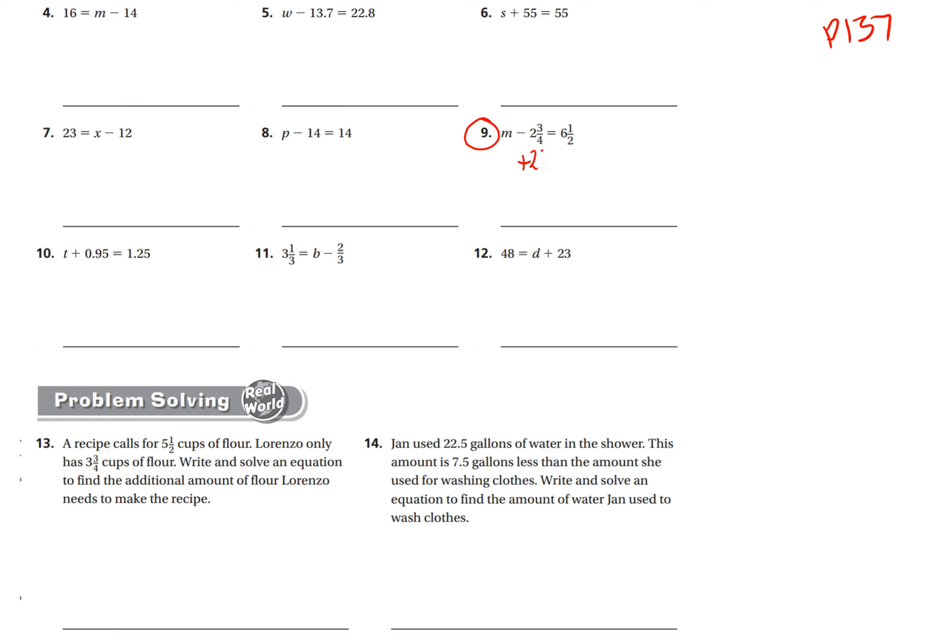Which would be plus two and three-fourths. That'll get rid of that, leaving me with just m on this side of the equal sign. But whatever I do to one side I have to do to the other, so I have to add two and three-fourths to the right side.